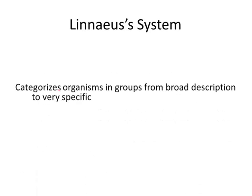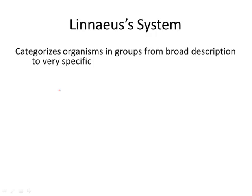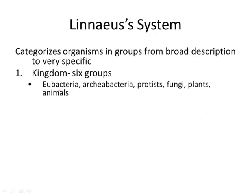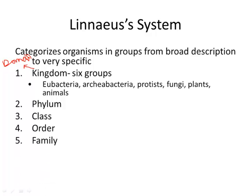Linnaeus was a scientist who organized organisms into different groups, from very broad to very specific. The first category he used was kingdom — there are six kingdoms: eubacteria, archaeobacteria, protists, fungi, plants, and animals. We have since modified Linnaeus's system by adding domain above kingdom, which is even broader — there are only three domains. Below kingdom the categories are phylum, class, order, family, genus, and species.